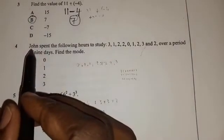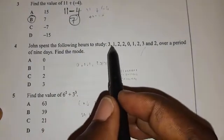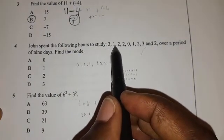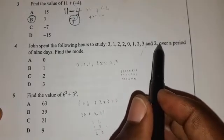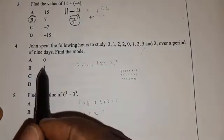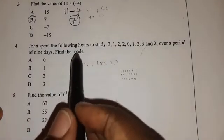Number four. John spent the following hours to study. He spent three hours, one hour, two hours, two hours, zero, one, two, three, and two over a period of nine days. Find the mode.